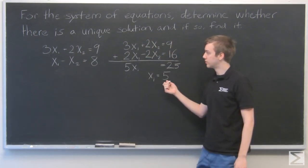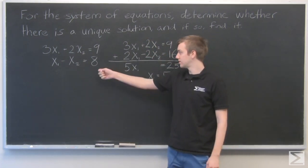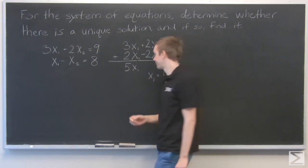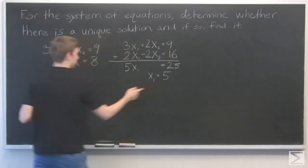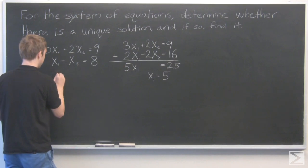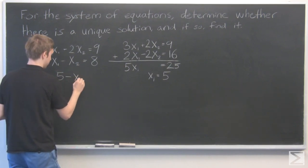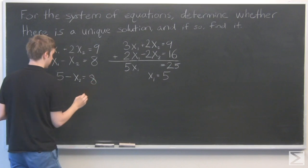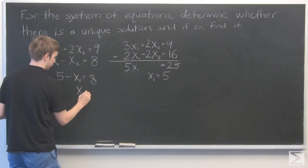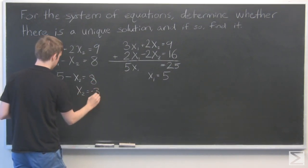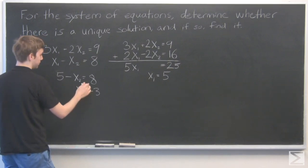Now that we have one solution, we can plug it back in, let's say, to this equation, and we'll get x2. So x1 equals 5, 5 minus x2 equals 8. That gives us x2 equals minus 3, because 5 minus negative 3 is 8.